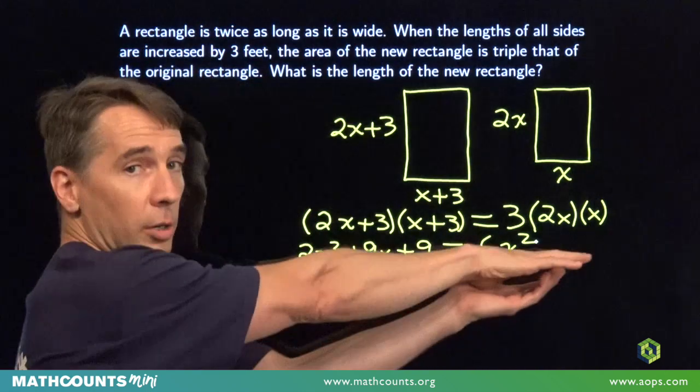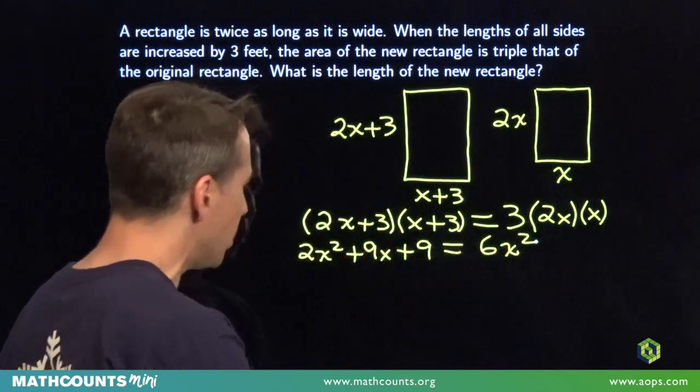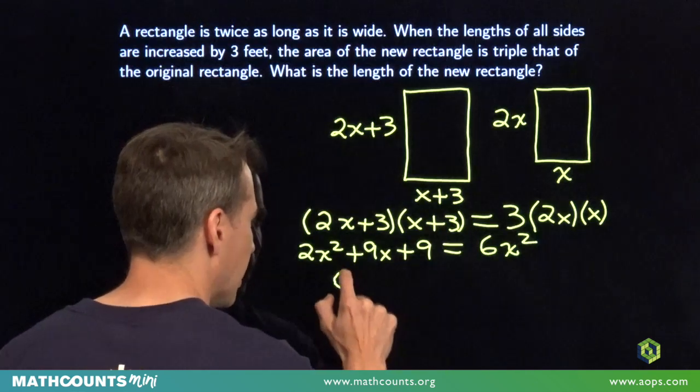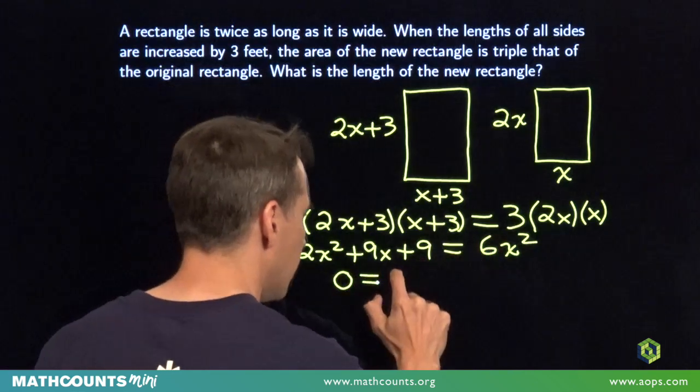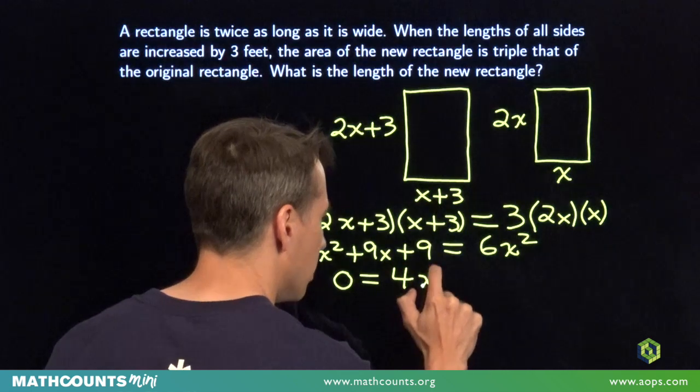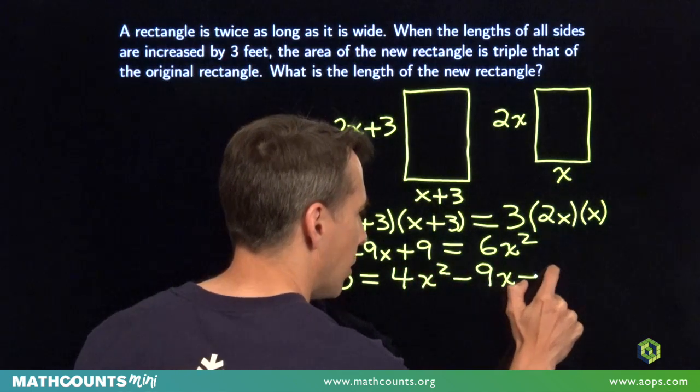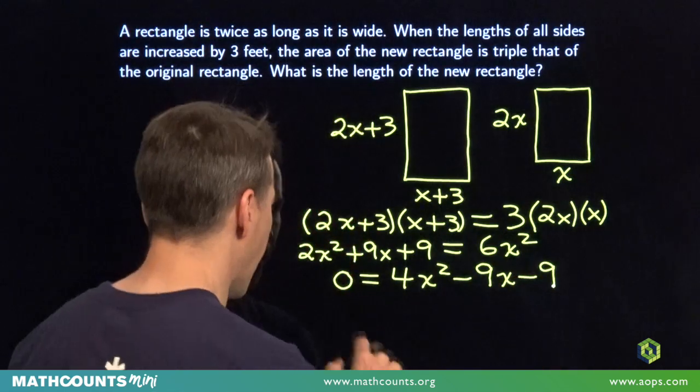Now I'm going to bring all these terms over here. Subtract off the 2x squared, the 9x, and the 9. So I get a quadratic over here: 4x squared minus 9x minus 9 equals 0. Let's factor that quadratic.